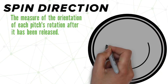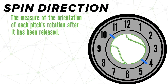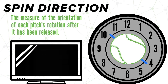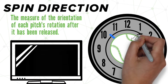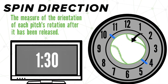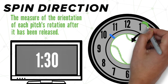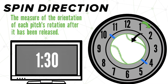Spin direction is the measure of the orientation of the pitch's spin after it has been released. It is typically measured as time on the clock, both graphically and numerically, as you can see here. The most confusing part about spin direction is the minutes, but all they are telling you is how far in between two hour marks each pitch was.